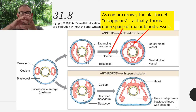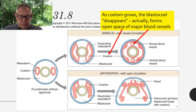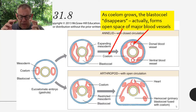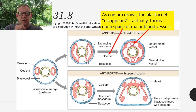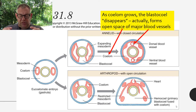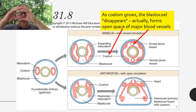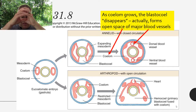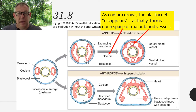Remember when you have that ball of cells called a blastula, there's a hollow opening called the blastocele. As the mesoderm forms, the coelom forms, and in this example the blastocele doesn't really disappear — it actually forms the open space inside the major blood vessels. You can see how the coelomic cavity is developing in this annelid, this earthworm, and as the mesoderm grows around and closes, it connects around the blastocele forming the dorsal and ventral blood vessels. That's one way to form a closed circulatory system.